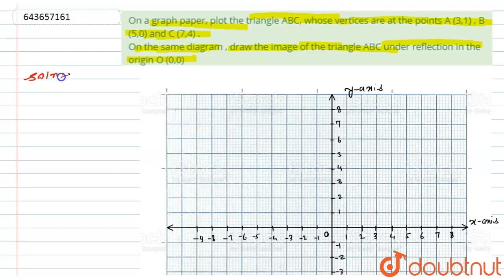So actually, we have to draw here a triangle or actually we have to plot a triangle ABC with the vertices A, B and C (3,1), (5,0) and (7,4). And onto the same diagram, we have to draw the image of the triangle ABC under the reflection into the origin O (0,0). So for that, first of all, let's write the coordinates which we have given here that is A with the coordinates (3,1), B we have given here (5,0) and C we have given here with the coordinates (7,4).